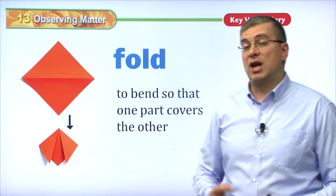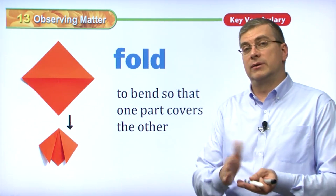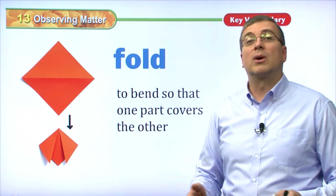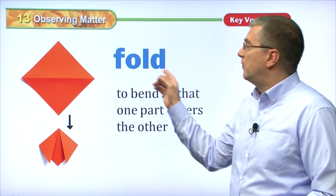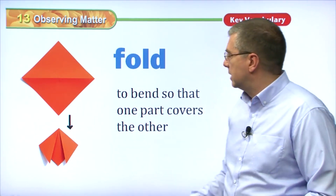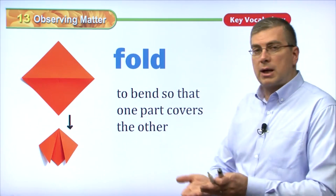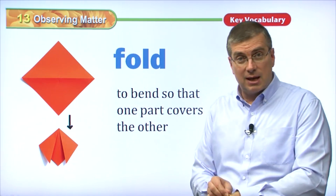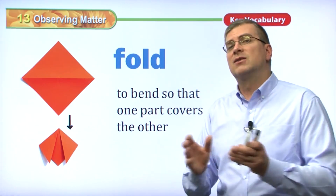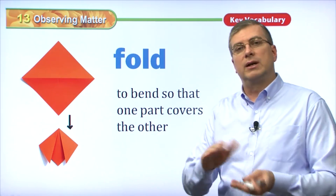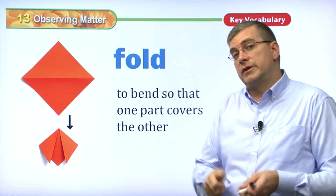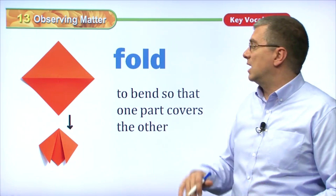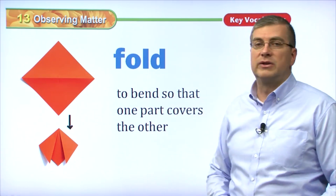Another way that you can change matter is that you can fold it, especially if you like to make objects from paper like origami. You will fold paper to make an object. Fold means to bend so that one part covers the other part. It's very common with paper, but you can also fold skin and lots of different material as long as it's soft. When you put your shirts away, you fold your shirts up and put them into your drawer. So to fold is another way to change matter.